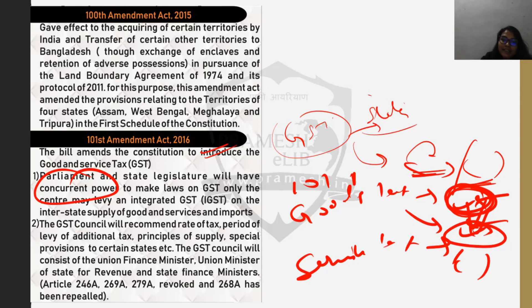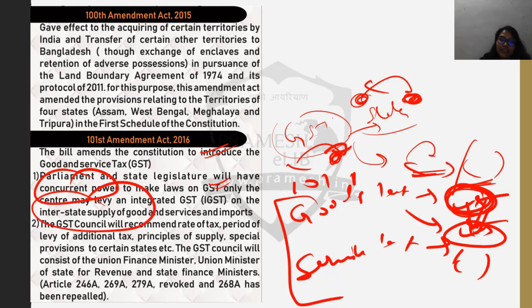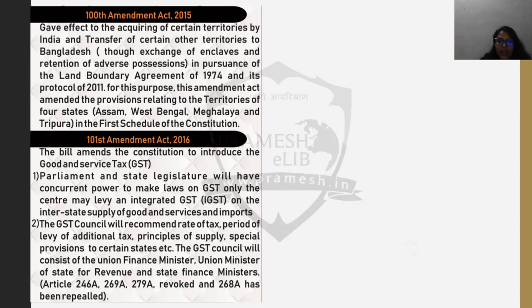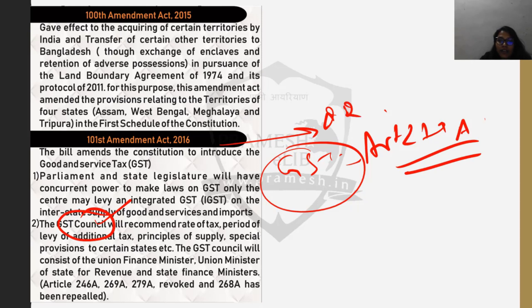Since GST is a combined tax, Parliament and state legislatures both have concurrent powers to make laws on GST. For interstate transfers, since one state cannot have jurisdiction over another, the center has the power to levy IGST on interstate supply of goods and services and also on imports. A GST Council will be formed, as mentioned in Article 279A.